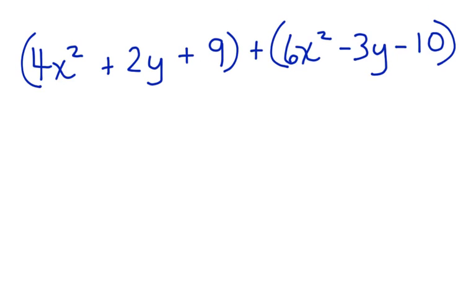Here we have 4x squared plus 2y plus 9 plus 6x squared minus 3y minus 10. Again, let's identify the like terms.